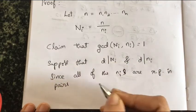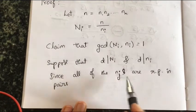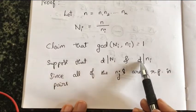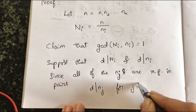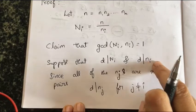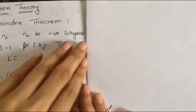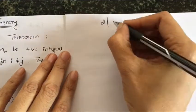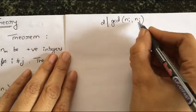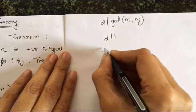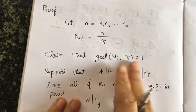Since all n_j's are relatively prime in pairs, if d divides n_i then d must also divide n_j for all j not equal to i. So d divides gcd(n_i, n_j). But gcd(n_i, n_j) = 1, so d divides 1, which implies the common divisor must be 1. That is why gcd(capital N_i, small n_i) = 1.